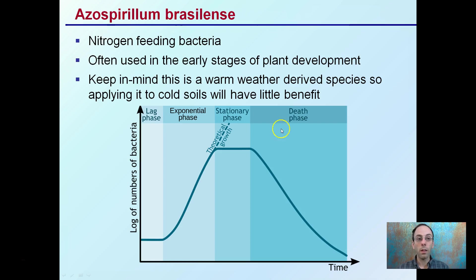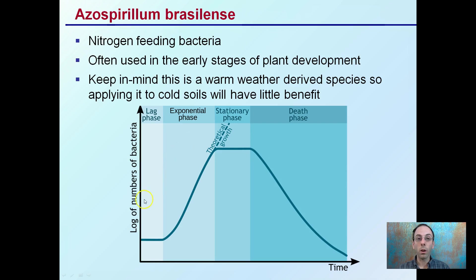Azospirillum brasilense is a nitrogen-fixing bacteria often used in the early stages of plant development. Keep in mind that this is a warm-weather-derived species, so applying it in cold soils will have little benefit. With bacteria, they can go through a very quick exponential phase as temperature increases, so you need to make sure they're provided with enough food and resources — otherwise they'll go through a very quick death phase: quick to rise, quick to fall. In soil environments, this is typically associated with root structures and will increase with the heat of the soil.